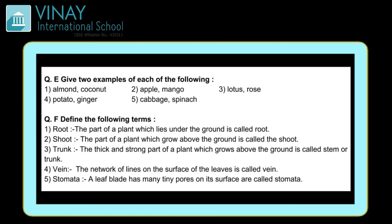Question E: give two examples of each of the following. Edible seeds — almond and coconut. Fruits — apple and mango. Flowers — lotus and rose. Edible stem — potato and ginger. Edible leaves — cabbage and spinach.